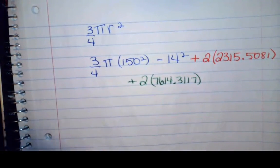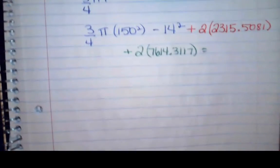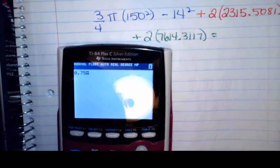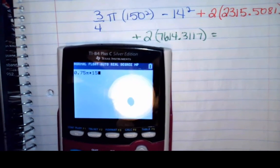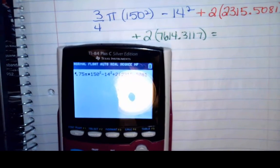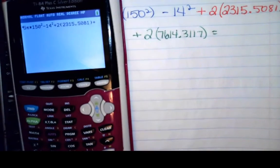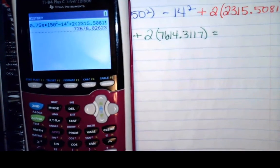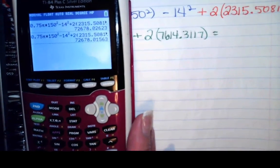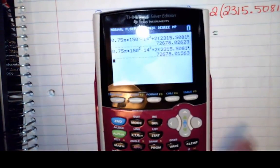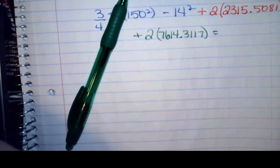Putting it all together: three-fourths times pi times 150 squared, minus 14 squared, plus 2 times 2,315.0581, plus 2 times 7,614.3117. The final answer is 72,678.01 square feet. That is a lot of grass — that is how much our cow can eat. This has been section 7.4, and I will see you for section 7.5.